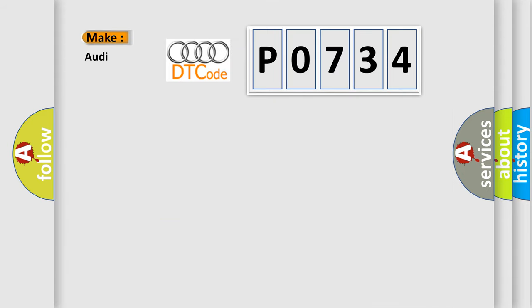So, what does the diagnostic trouble code P0734 interpret specifically for Audi car manufacturers? The basic definition is Gear 4 incorrect ratio.